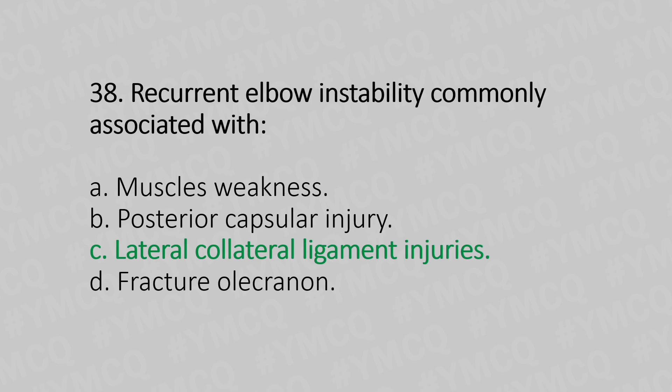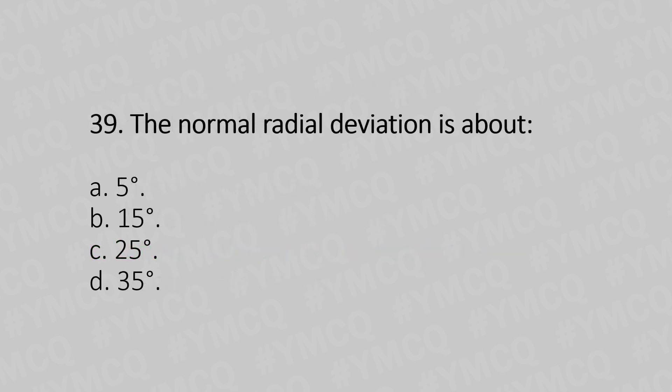Now let's move to question number 39. The normal radial deviation is about: Option A, 5 degrees. Option B, 15 degrees. Option C, 25 degrees. Option D, 35 degrees. And the answer is Option B, 15 degrees.